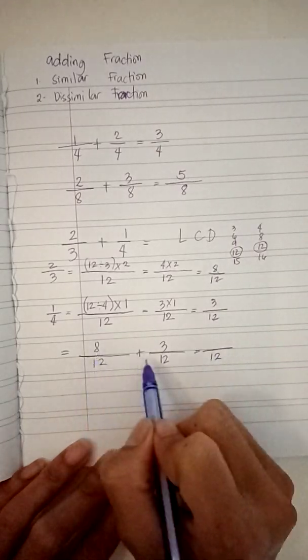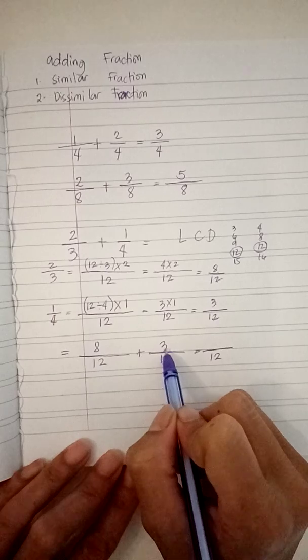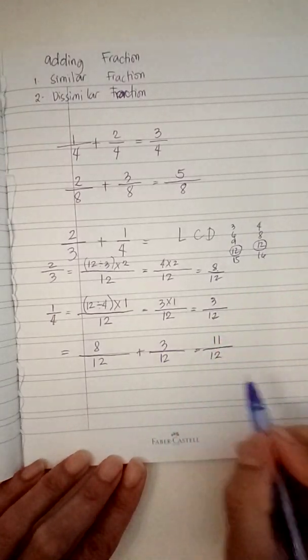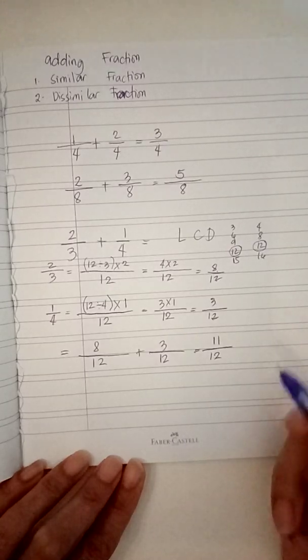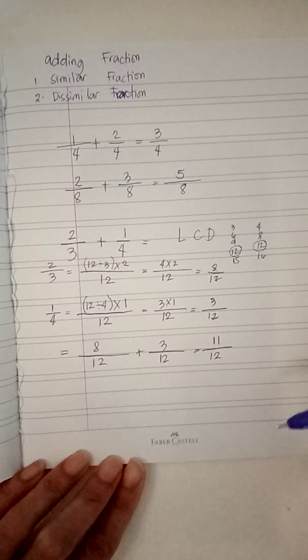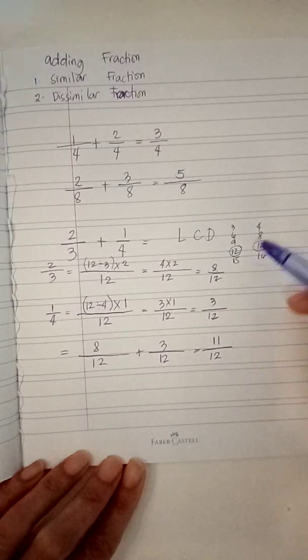Now, eight plus three equals eleven. If there's some cases, if you can simplify your answer in the lowest term, you can simplify it.